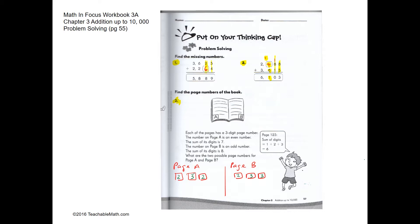For page A, it's an even number and the sum is 7. So one example could be 232 where the sum is 7 and it is even.